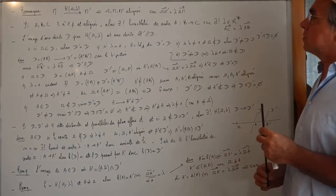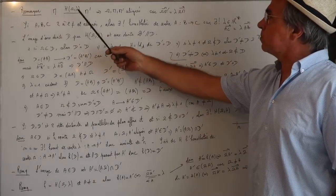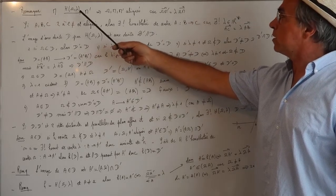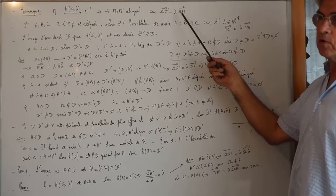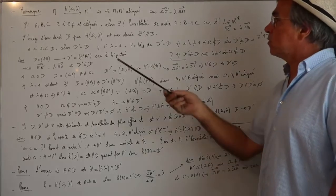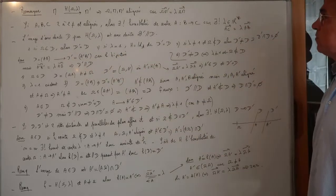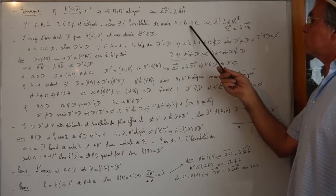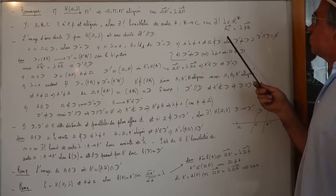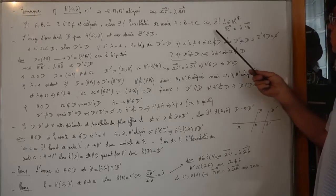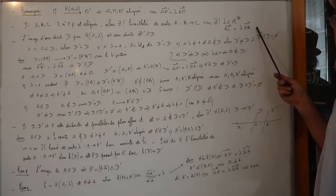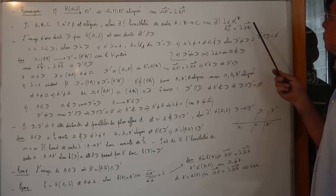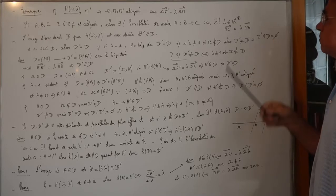Remarque : si M a pour image M' dans l'homothétie de centre Ω et de rapport λ, alors Ω, M et M' sont alignés, à cause de la relation vectorielle — c'est un alignement au sens large, les points peuvent être confondus. Si A, B, C sont deux à deux distincts et alignés, il existe une unique homothétie de centre A qui envoie B en C, tout simplement parce qu'il y a un unique réel λ non nul vérifiant vecteur AC = λ·vecteur AB.